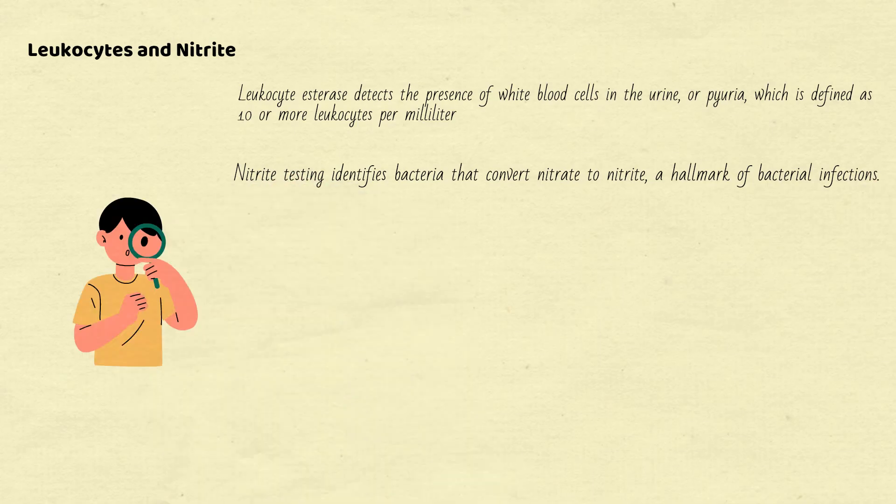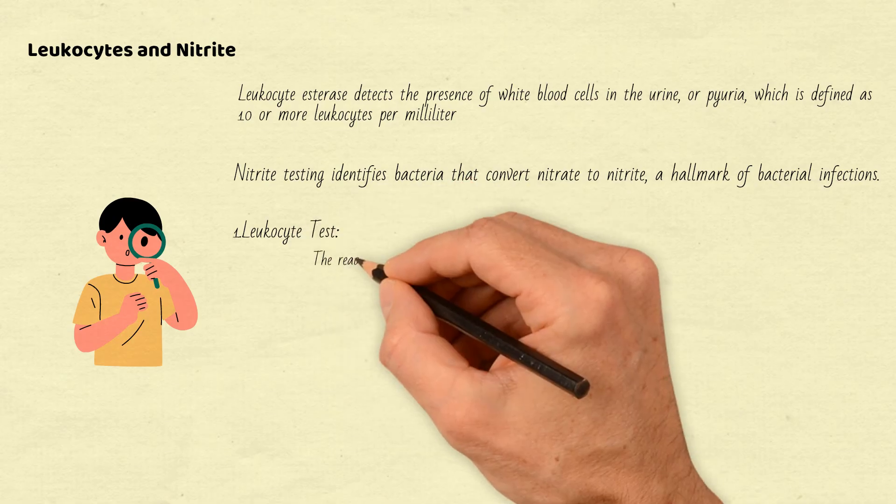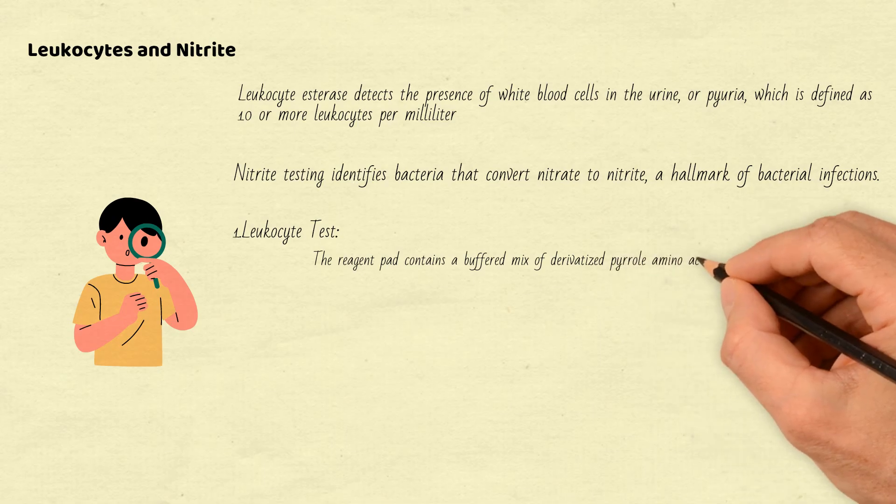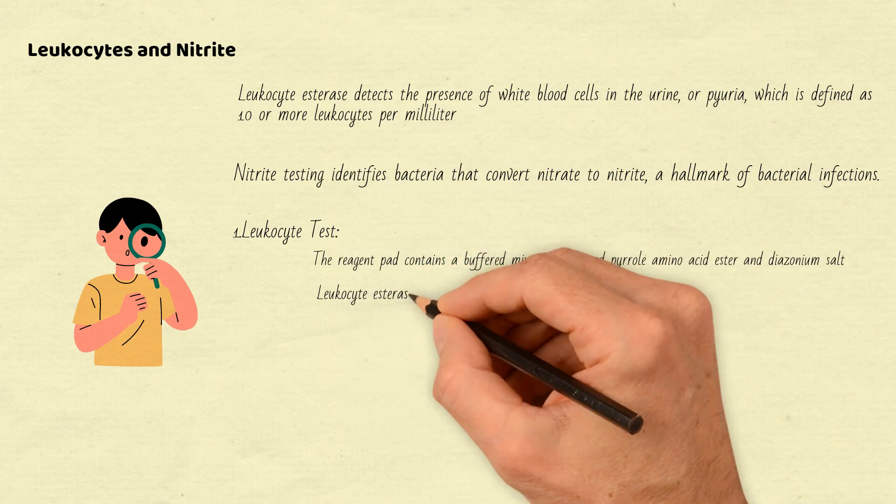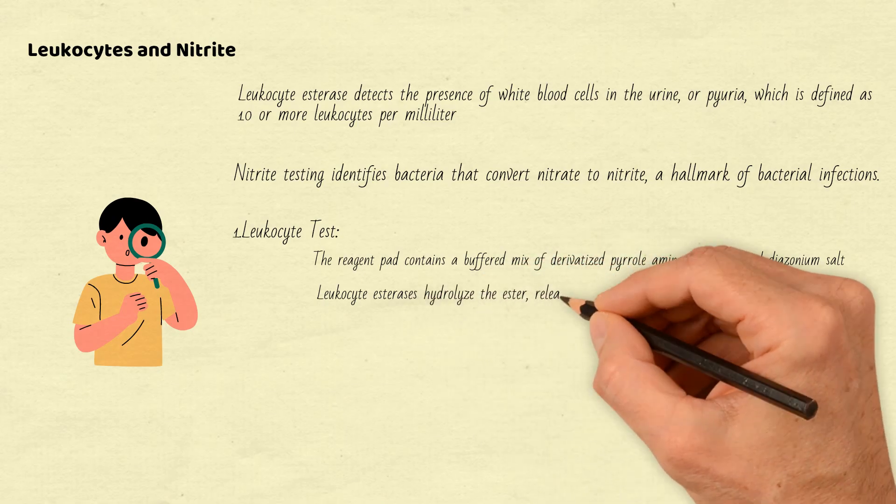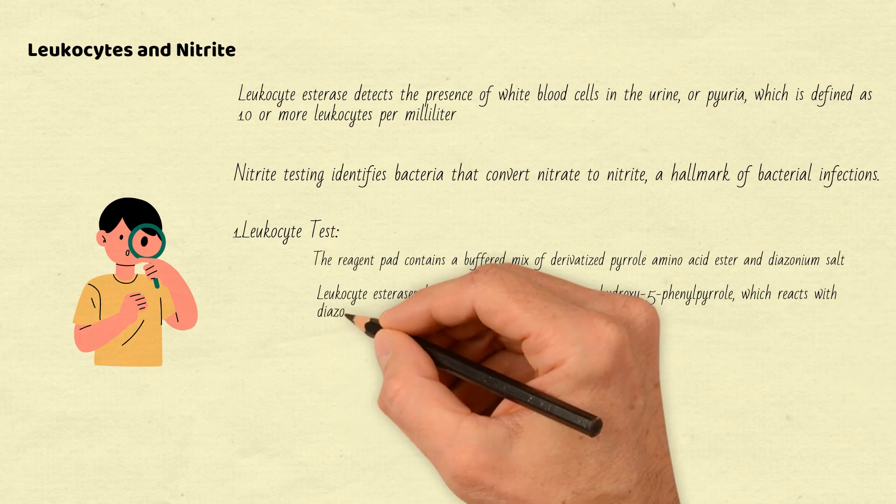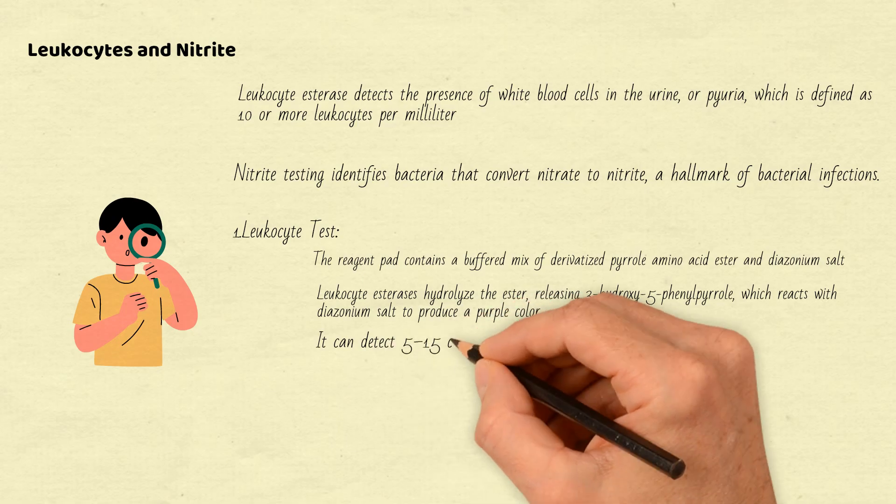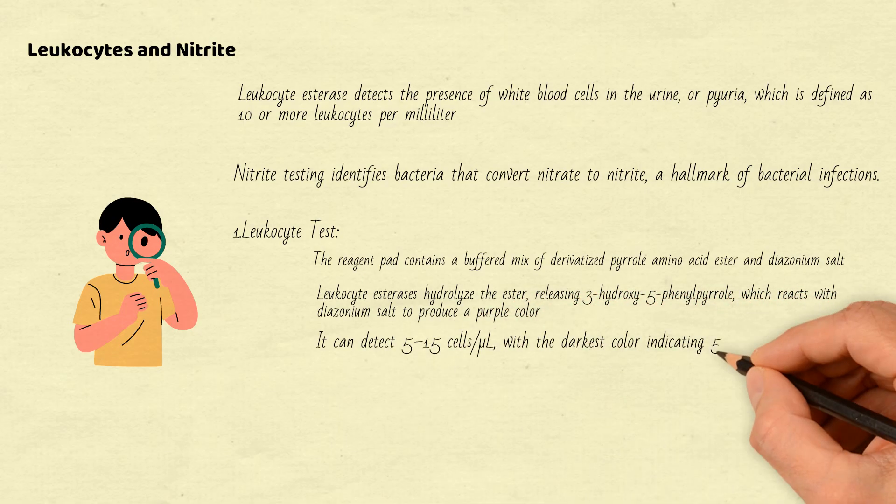1. Leukocyte test. The reagent pad contains a buffered mix of derivatized pyrrole amino acid ester and diazonium salt. Leukocyte esterase hydrolyzes the ester, releasing 3-hydroxy, 5-phenylpyrrole, which reacts with diazonium salt to produce a purple color. It can detect 5 to 15 cells per microliter, with the darkest color indicating 500 cells per microliter or more.